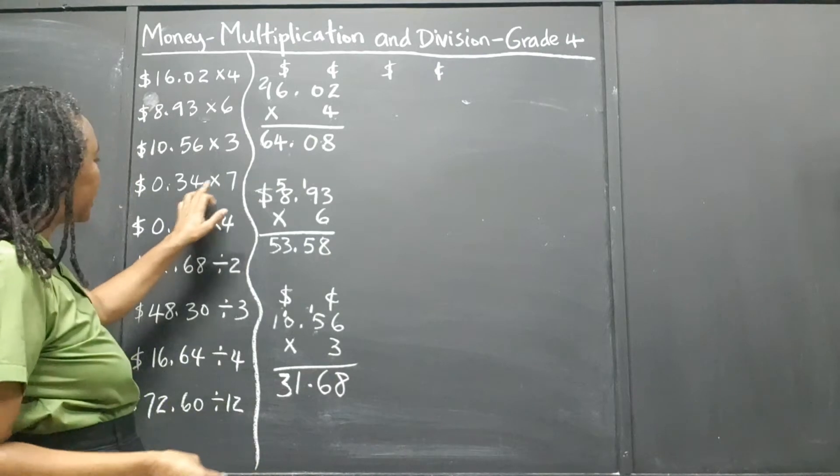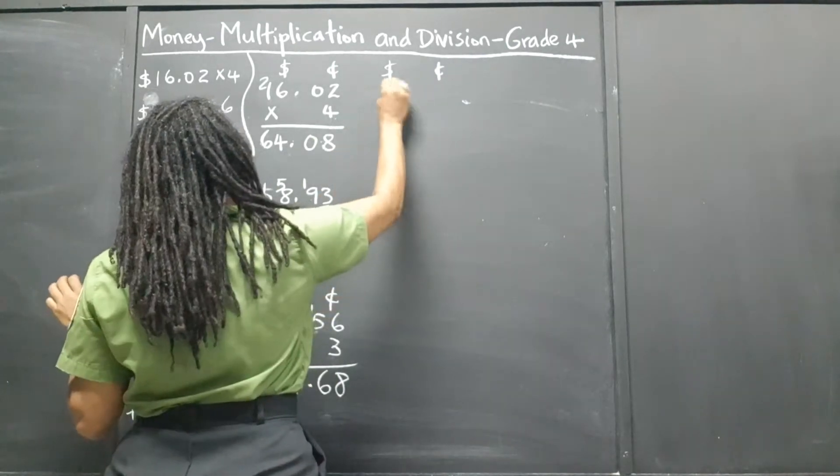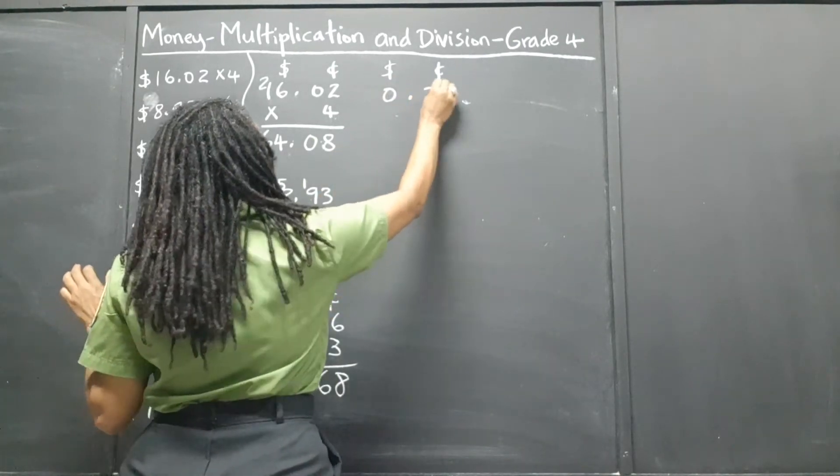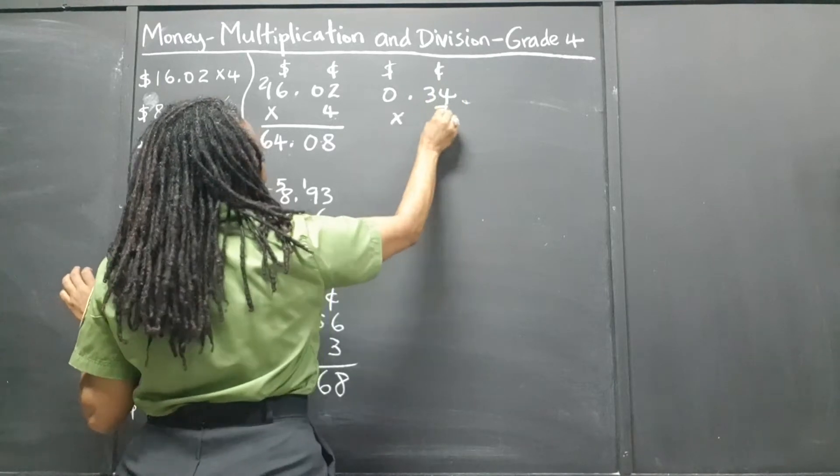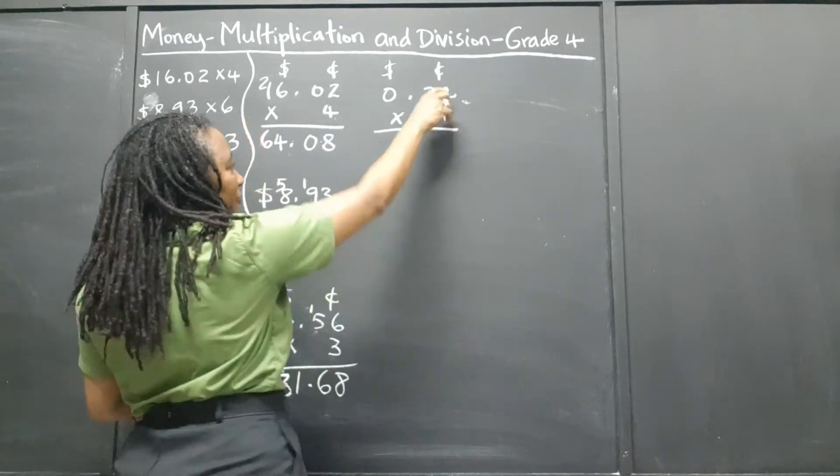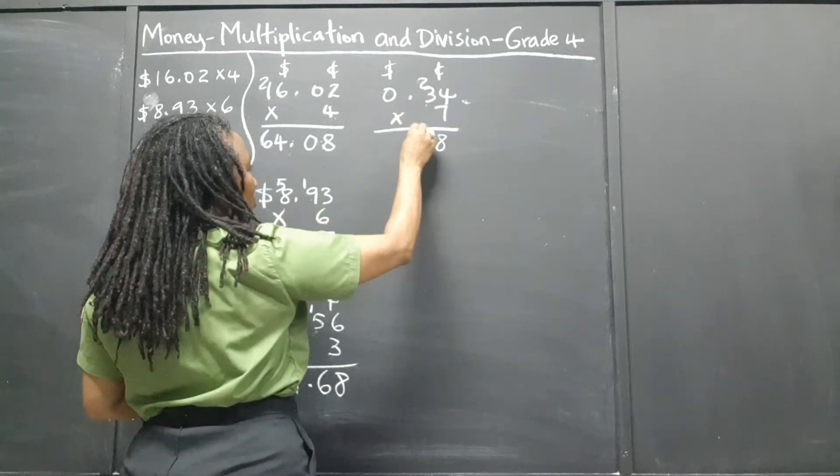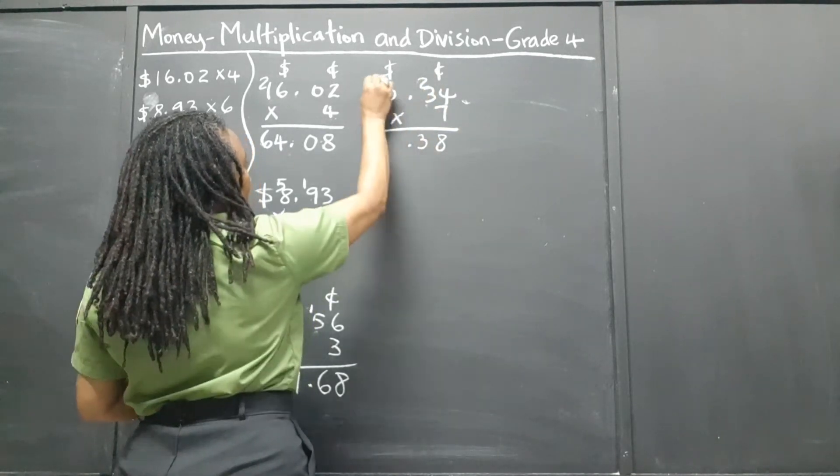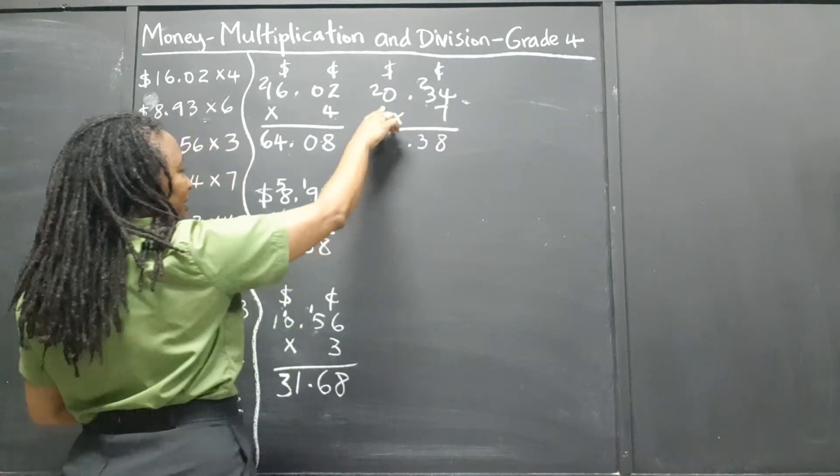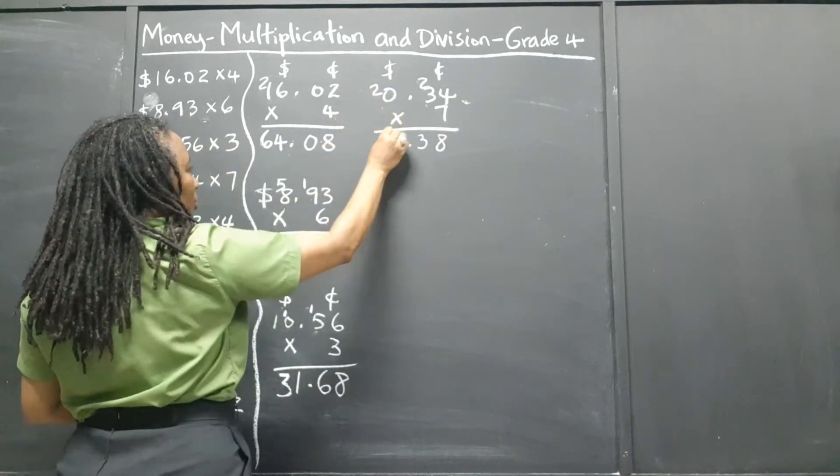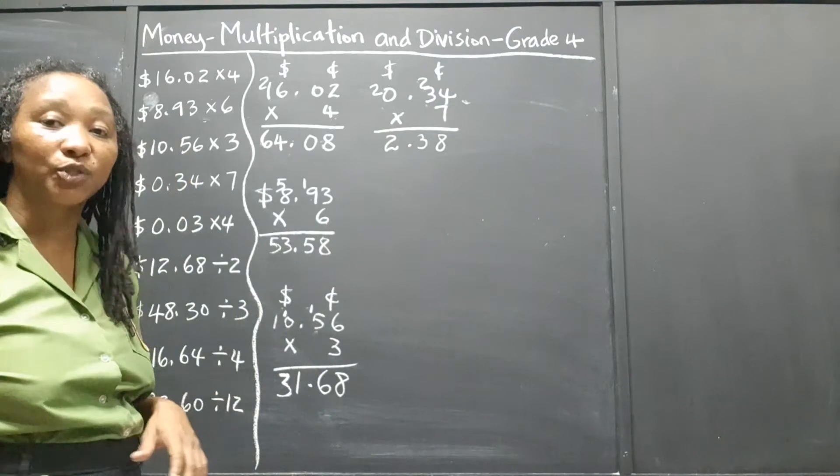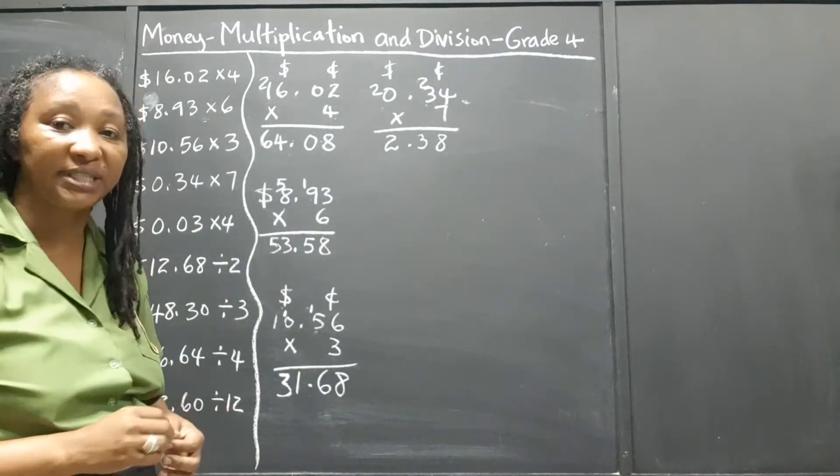So we have 34 cents times 7. 0 dollars and 34 cents times 7. 7 times 4 is 28. 7 times 3 is 21, and 2 is 23. 7 times 0 is 0, plus 2 is 2. So that gives $2.38.